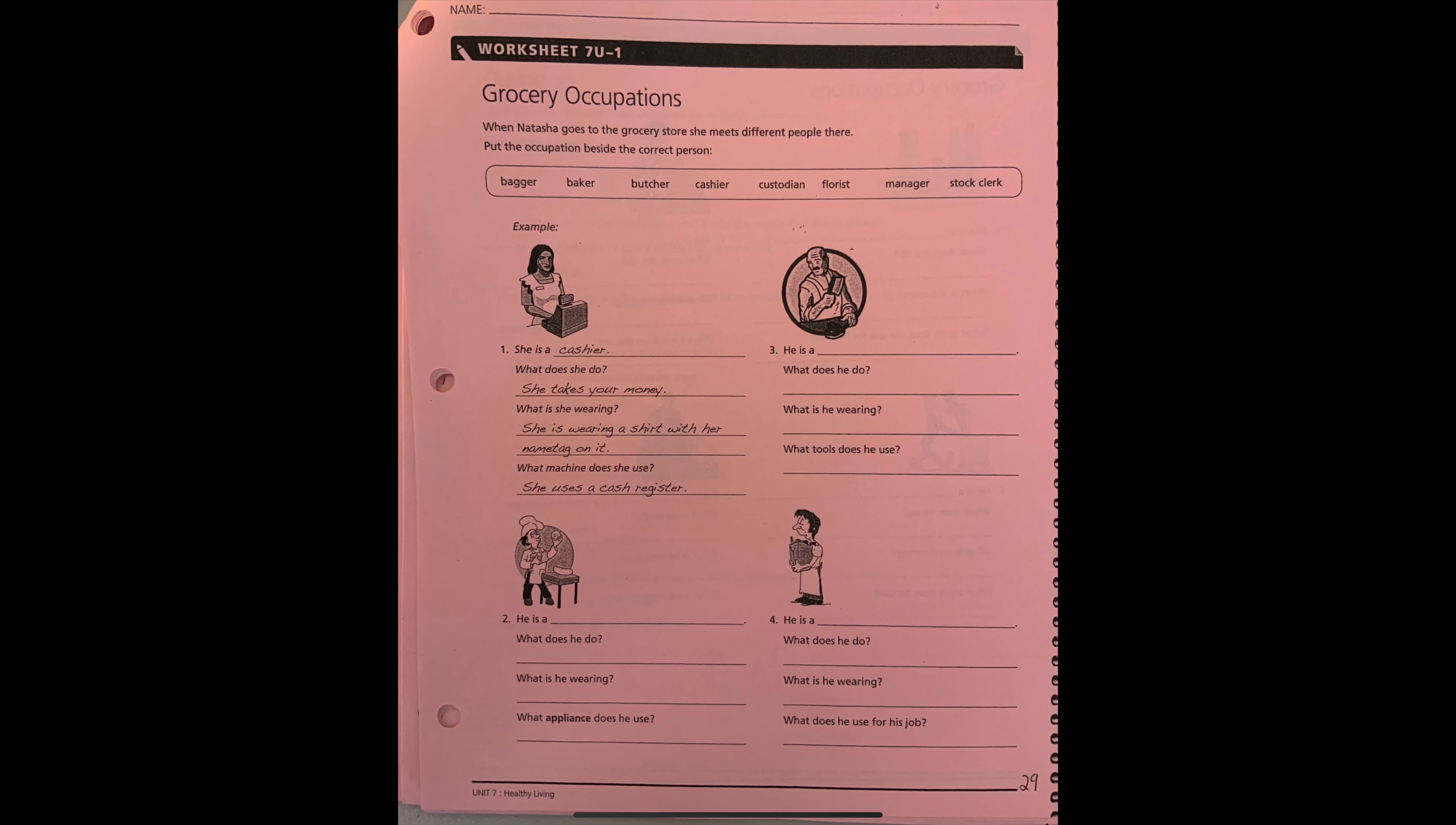So we will write sentences. You will listen to me and write the sentences. Example number one. She is a cashier. What does she do? She takes your money.